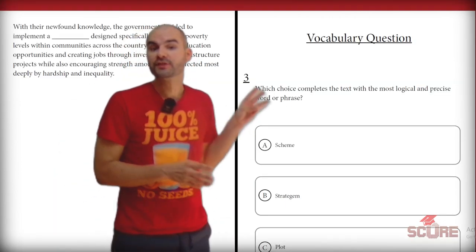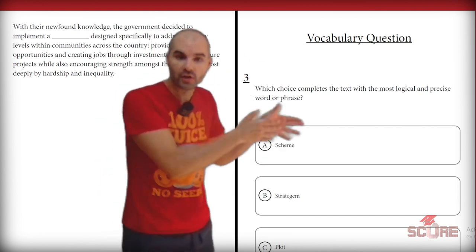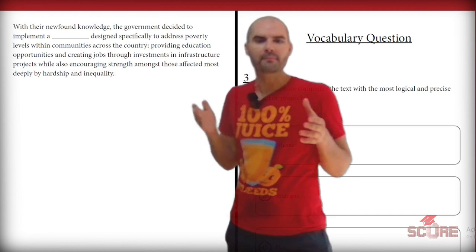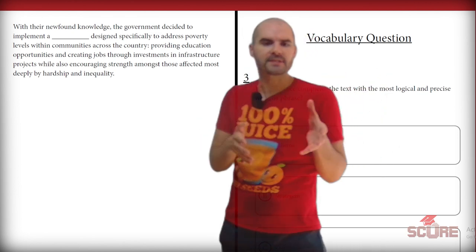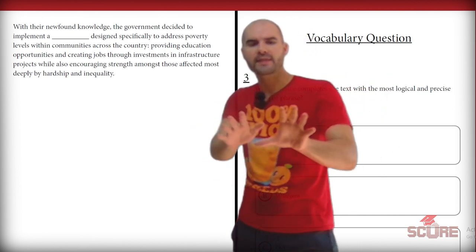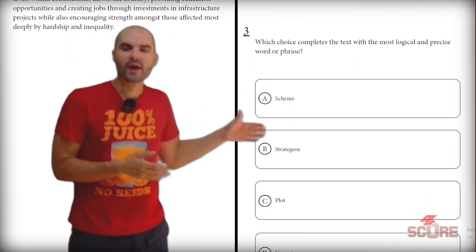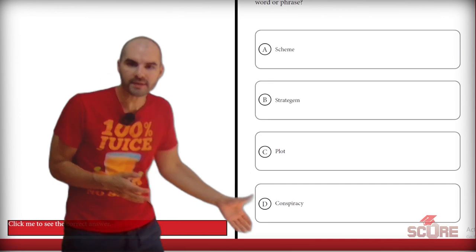I can use the same strategy for this third question. Again, I see the question. I know I'm dealing with vocabulary. I take a look at the paragraph and see that the government decided to implement a blank designed specifically to address poverty levels. Okay, that's all I need to read. So I'm just going to take a look at my answer choices. We've got scheme, stratagem, plot, and conspiracy.